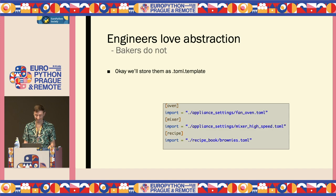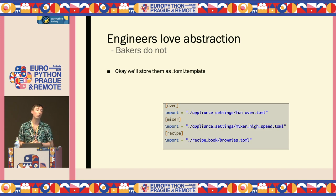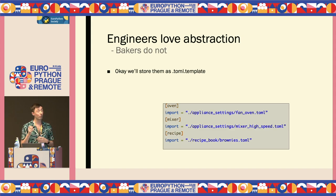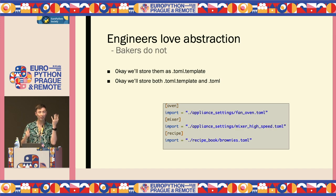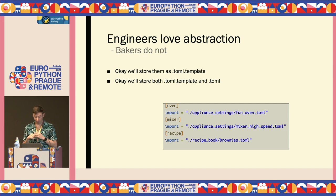What if instead we store it as a .toml.template? Then when we go to build time to ship our product, we turn that .toml.template into a .toml — we do all the imports. Then the flat file configs are on site, they can edit them. And in our codebase, we have a nice, well-structured, no-redundancy setup. We could store the .toml.template and the .toml and keep them in sync, maybe with pre-commits or scripts, and check both in — that's kind of the best of both worlds.